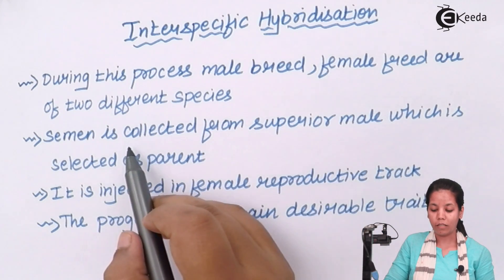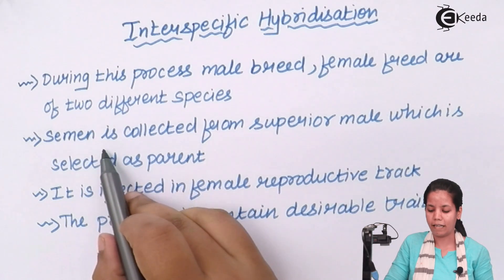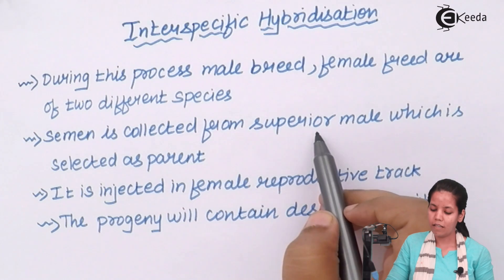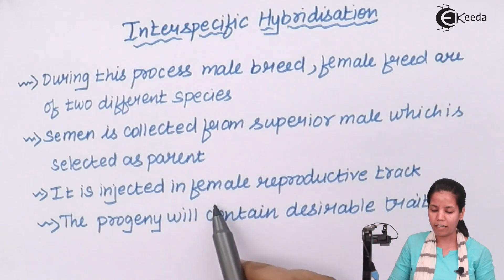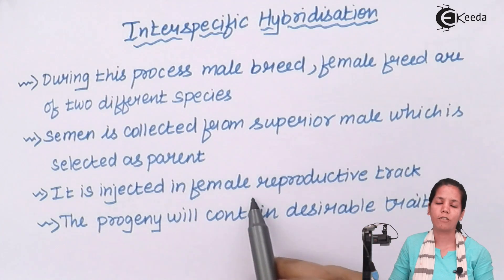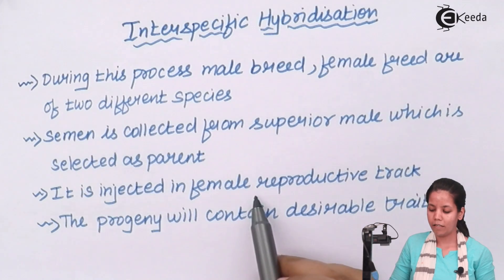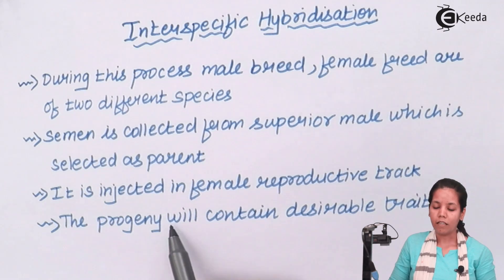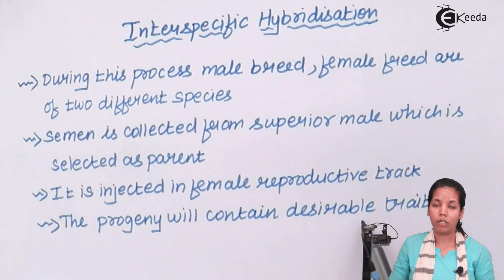Semen or the male gamete is collected from the superior male and injected into the female reproductive tract. The process of reproduction takes place after approximately seven to eight months, and once that happens, the progeny or child will have the desirable traits of both mother and father.